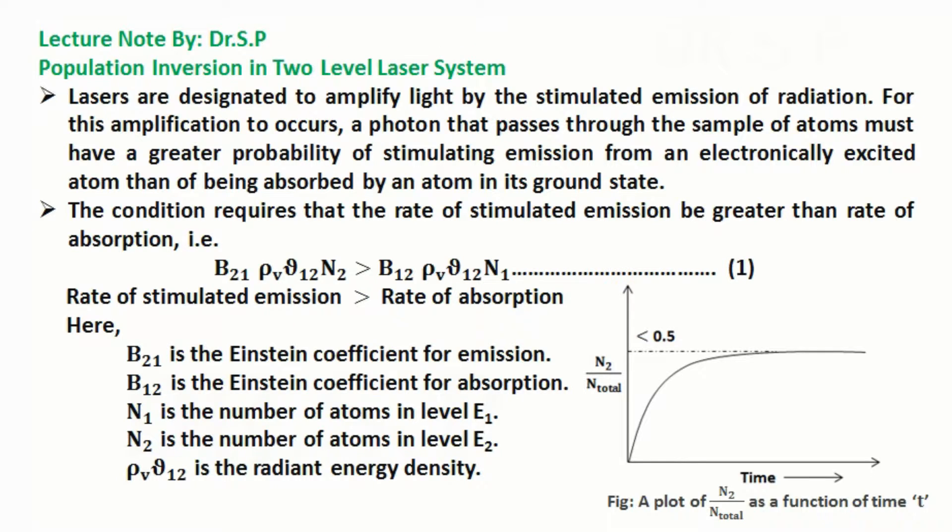For this amplification to occur, a photon that passes through the sample of atoms must have a greater probability of stimulating emission from an electronically excited atom than of being absorbed by an atom in its ground state. The condition requires that the rate of stimulated emission be greater than rate of absorption, as clearly mentioned in equation 1.